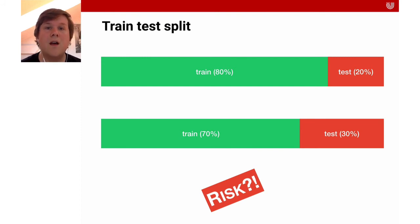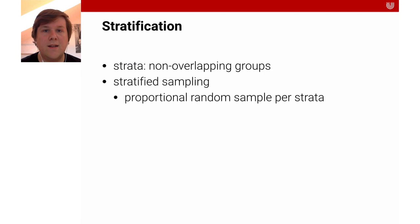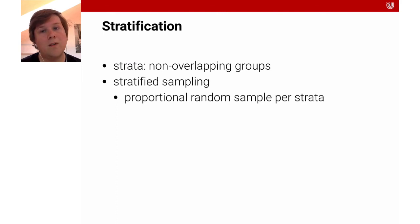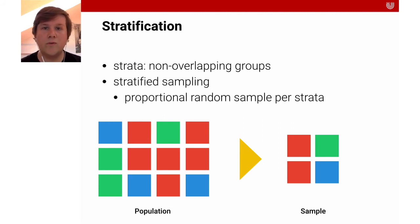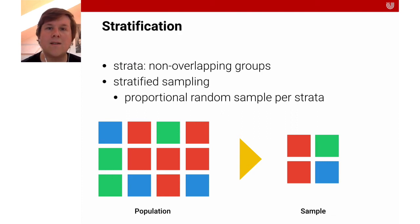If we have very many cars of a particular class, they might dominate our training or testing, and we don't want that. One mitigation is the so-called stratification. In statistics, a stratum is a non-overlapping group. What we try to do is perform stratified sampling, which means a proportional random sample per stratum — we still want random parts for training and testing, but proportional to the different groups in our data. The visualization shows: if we select randomly, we might end up with four red squares, but stratification ensures we have enough of the blue, green, and red ones, so the model gets to know all different target types.